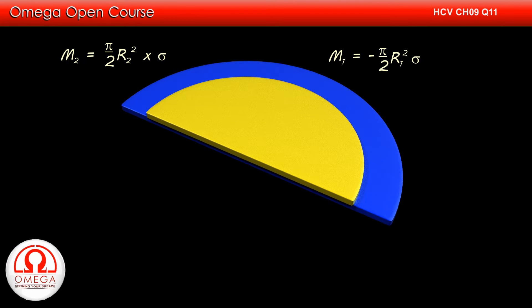Similarly, the mass of the disk of radius R1 is -π/2 × R1² × σ. Since we have taken the density as negative, its mass is negative.